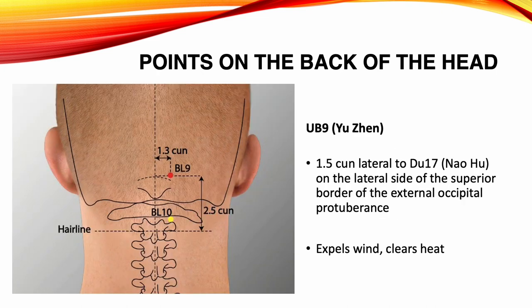Urinary Bladder 9, Ugen. Location: 1.5 Sun lateral to Du 17, on the lateral side of the superior border of the external occipital protuberance. Functions: expels wind, clears heat. Indications: headache, dizziness, blurred vision, nasal obstruction.